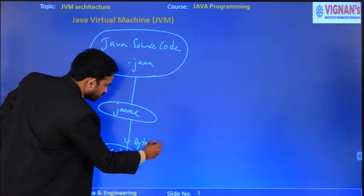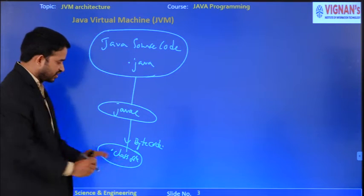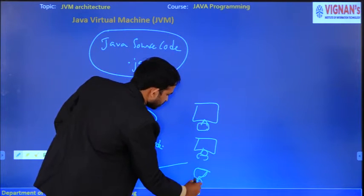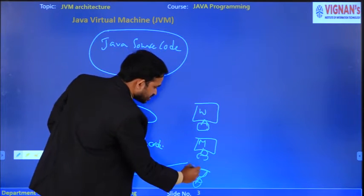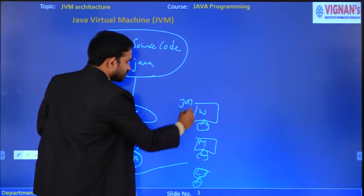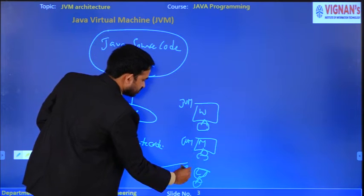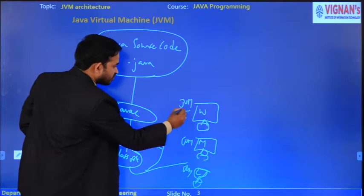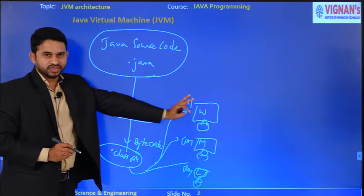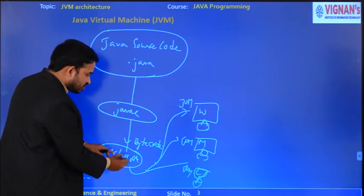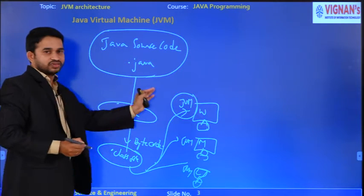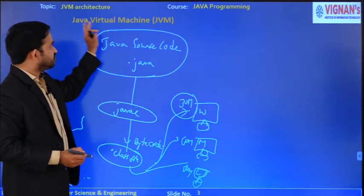This bytecode or .class file is then given to the JVM. In the previous session we discussed different platforms — Windows, Mac OS, Linux — and each should have a JVM. This .class file can run on any platform, irrespective of the operating system. We give the .class file to the JVM, and it processes it internally.